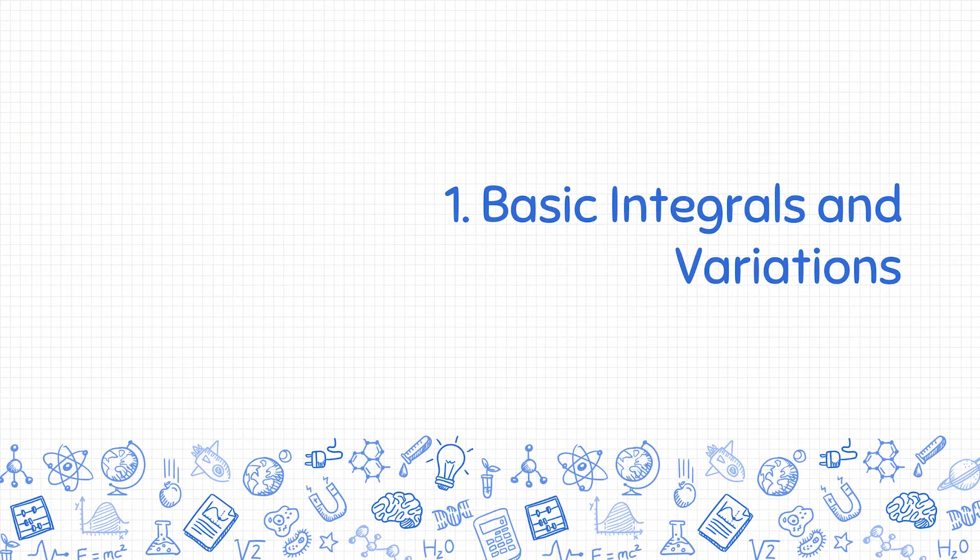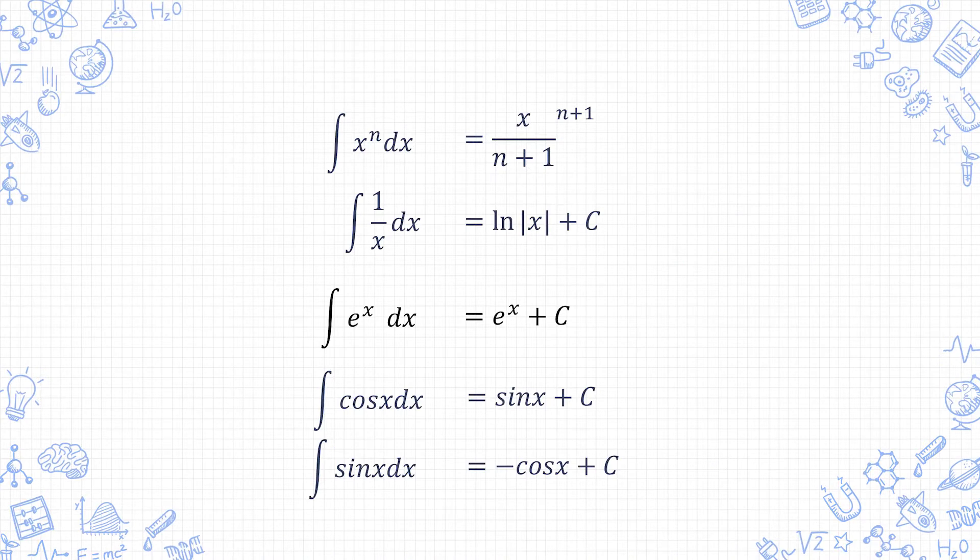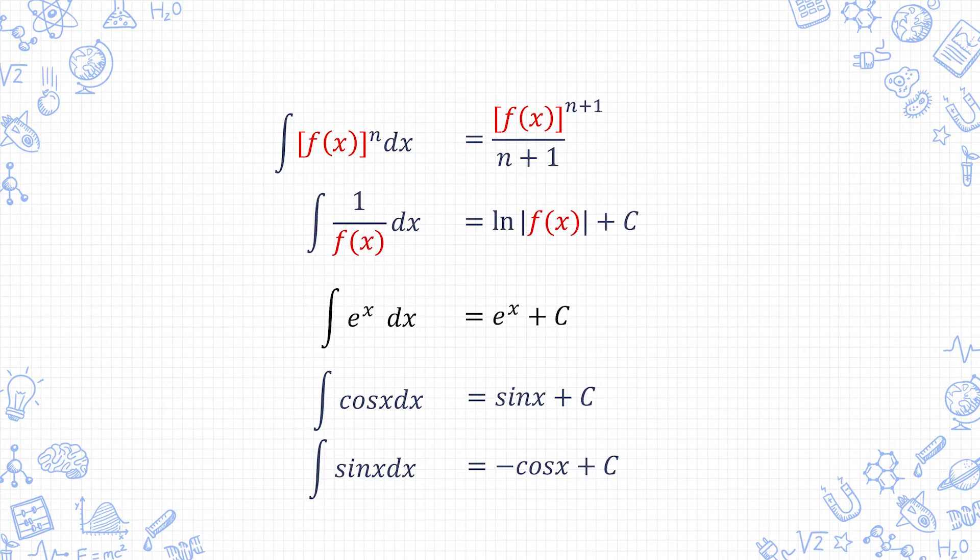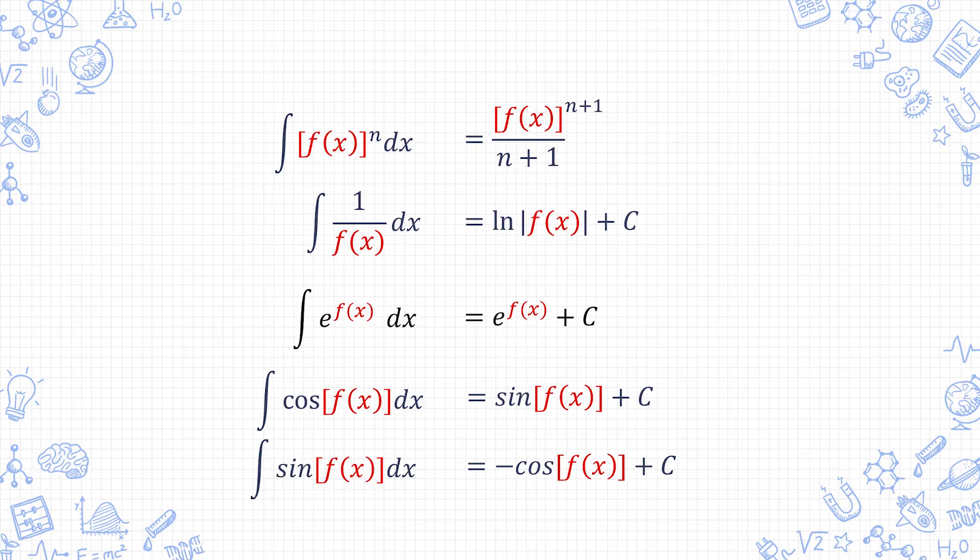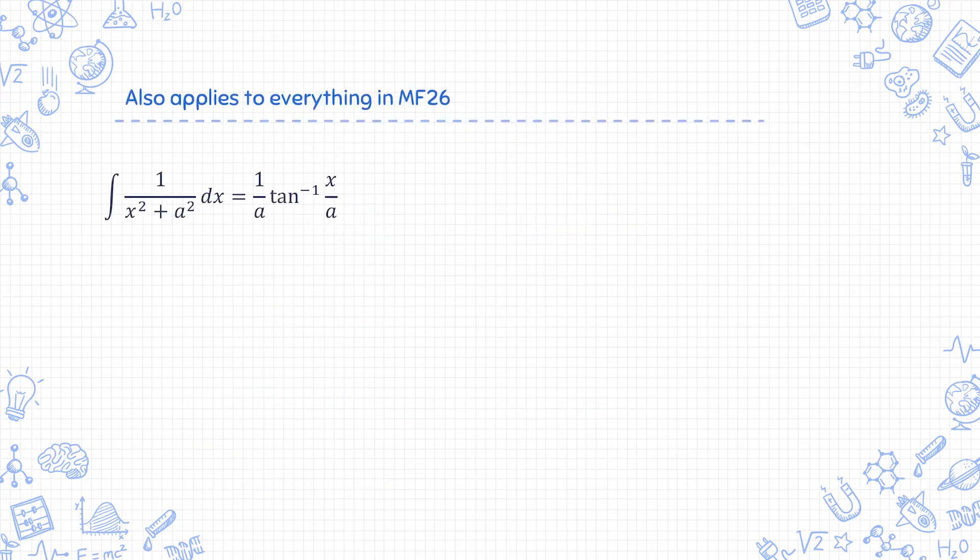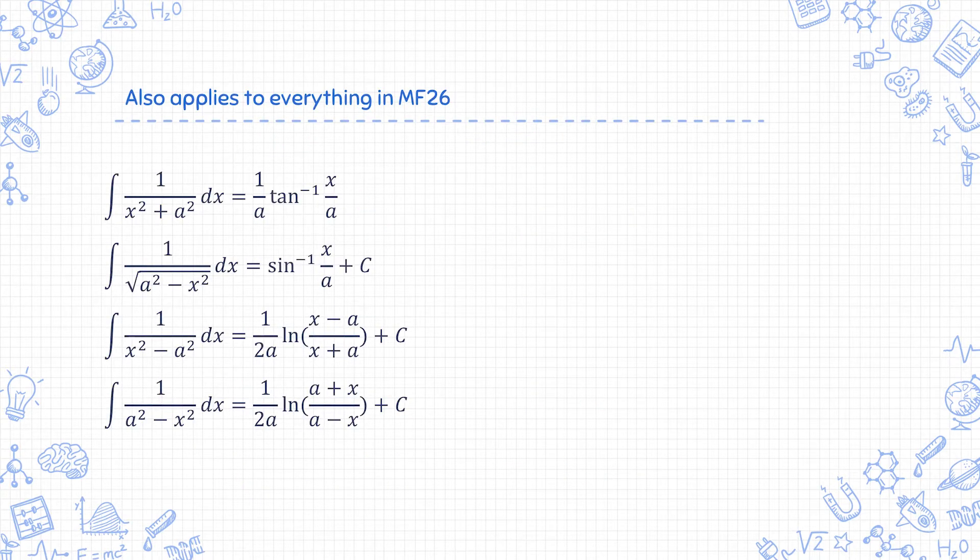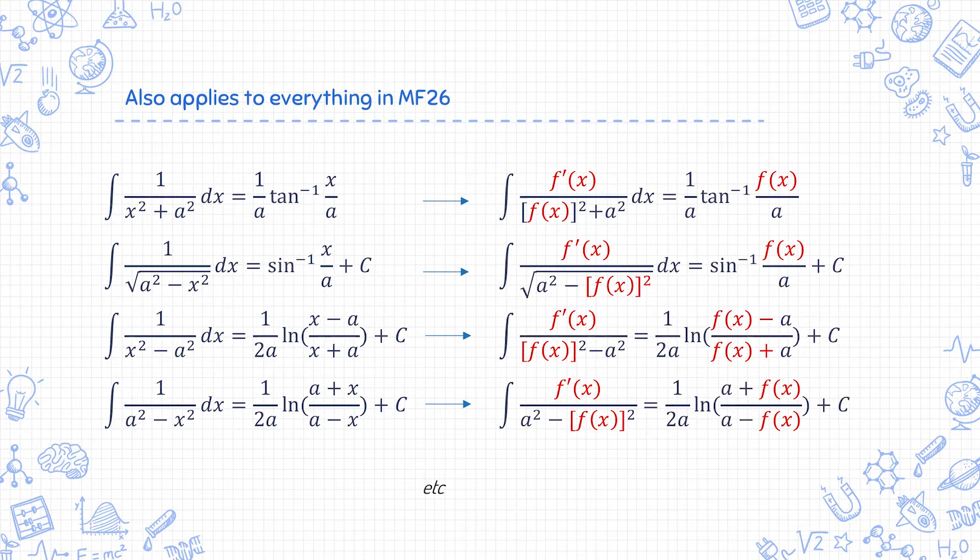First up, basics. I'm going to assume that you already know how to integrate x to the power of n, 1 over x, e to the power of x, cosine x, sine x. Now you need to extend these into more general forms, meaning you can replace the x with fx on both sides and multiply by f'x on the left-hand side. And you can do the same with everything in MF26. Multiply the left-hand side by f'x and replace the x with fx on both sides.